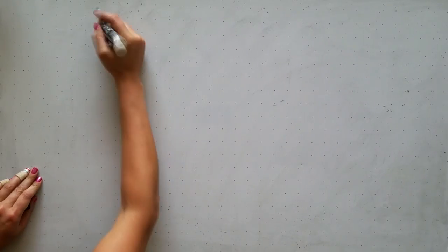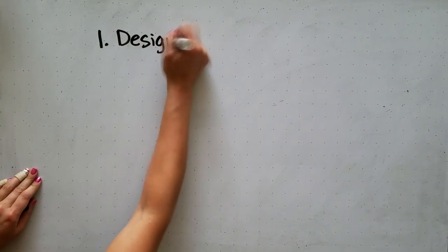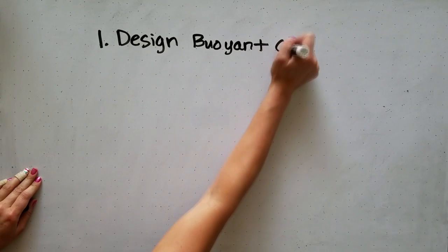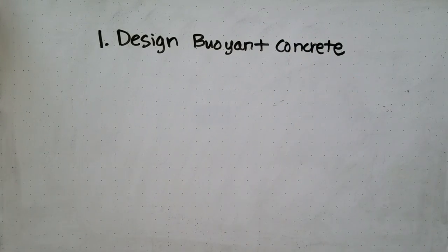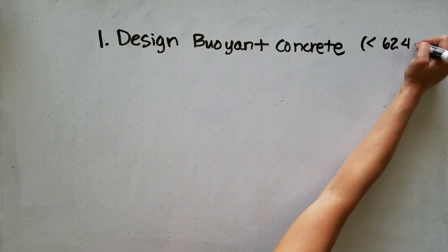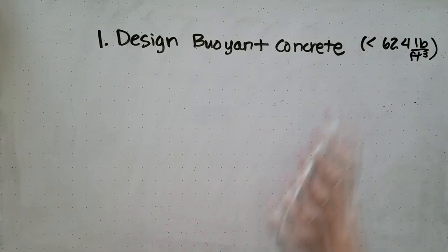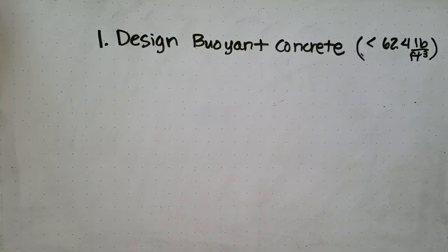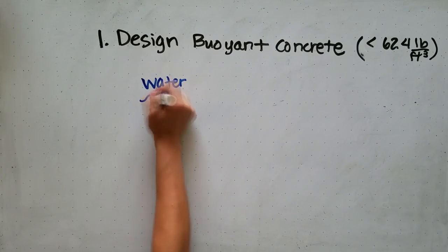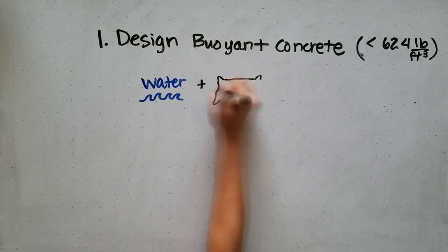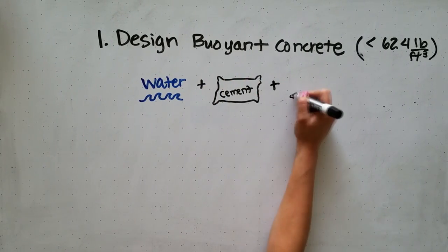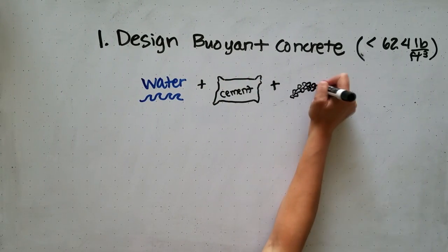The first step is to design buoyant concrete, which means that the concrete must be less than 62.4 pounds per cubic foot. Concrete is made from three main ingredients: water, cement, and aggregates.